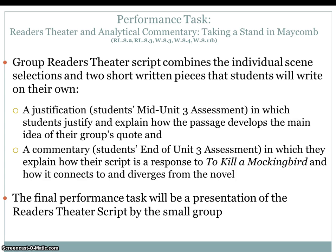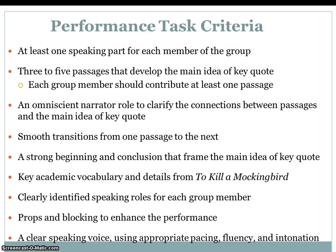The final performance task will be a presentation of the reader's theater script by the small group. The criteria includes: at least one speaking part for each member, three to five passages that develop the main idea of the key quote, an omniscient narrator role to clarify connections between passages and the main idea, smooth transitions from one passage to the next, a strong beginning and conclusion that frame the main idea of the key quote, key academic vocabulary and details, clearly identified speaking roles for each member, props and blocking to enhance the performance, and a clear speaking voice using appropriate pacing, fluency, and intonation.